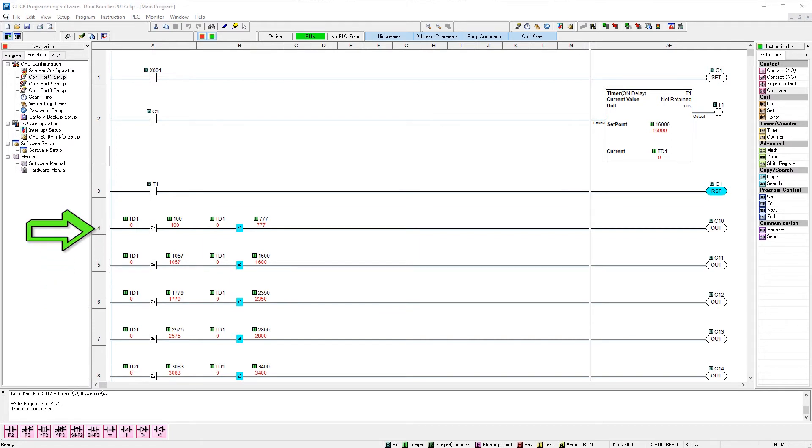I use many ladder logic rungs with compare statements to trigger all the cylinders. For example, on rung 4 I say if the value of timer T1 is greater than or equal to 100 milliseconds or less than or equal to 777 milliseconds, then turn on output C10 which is an internal bit in the PLC.